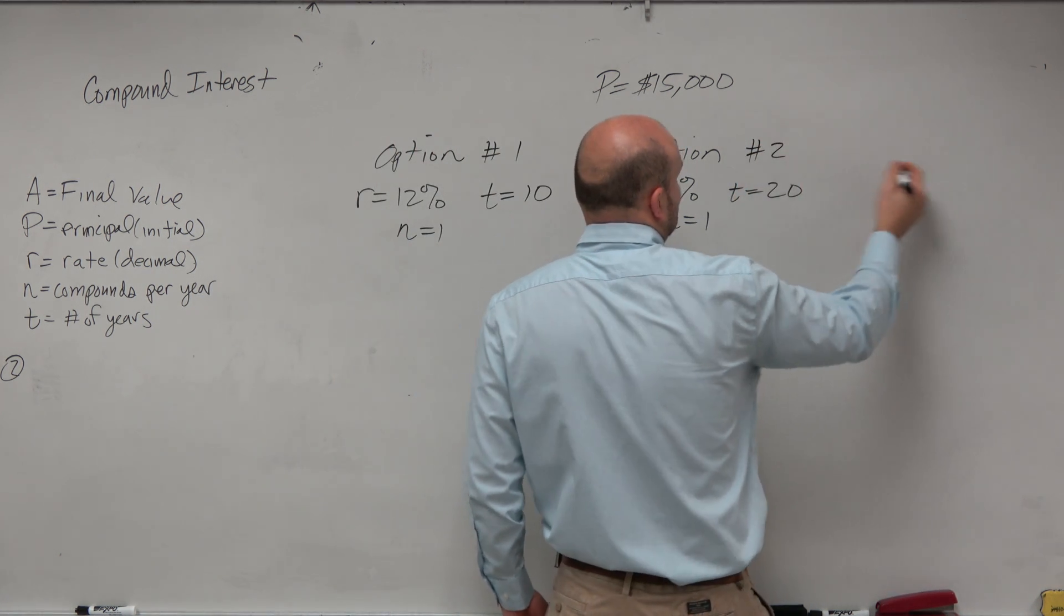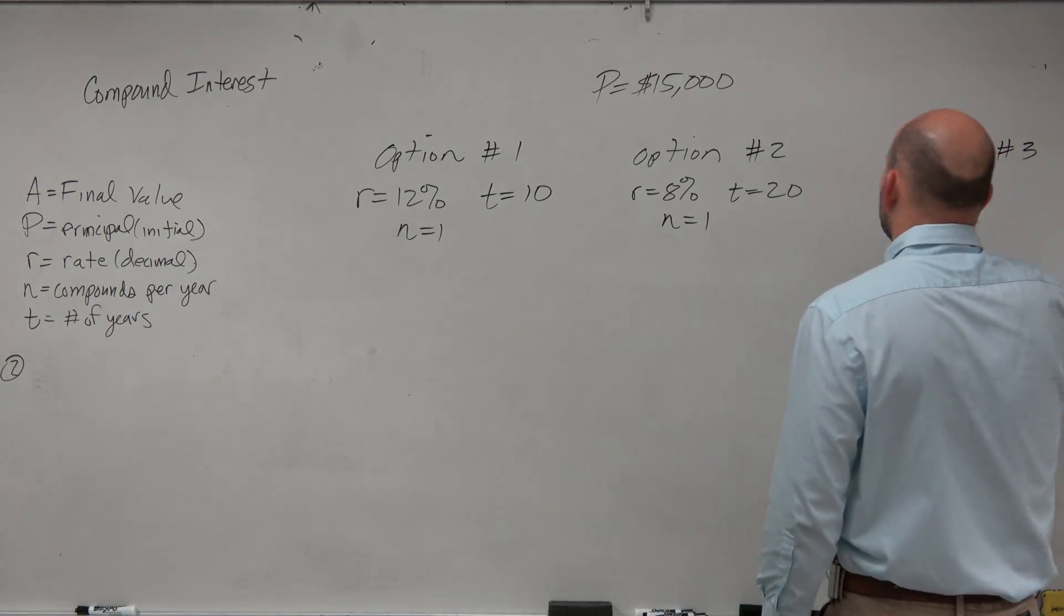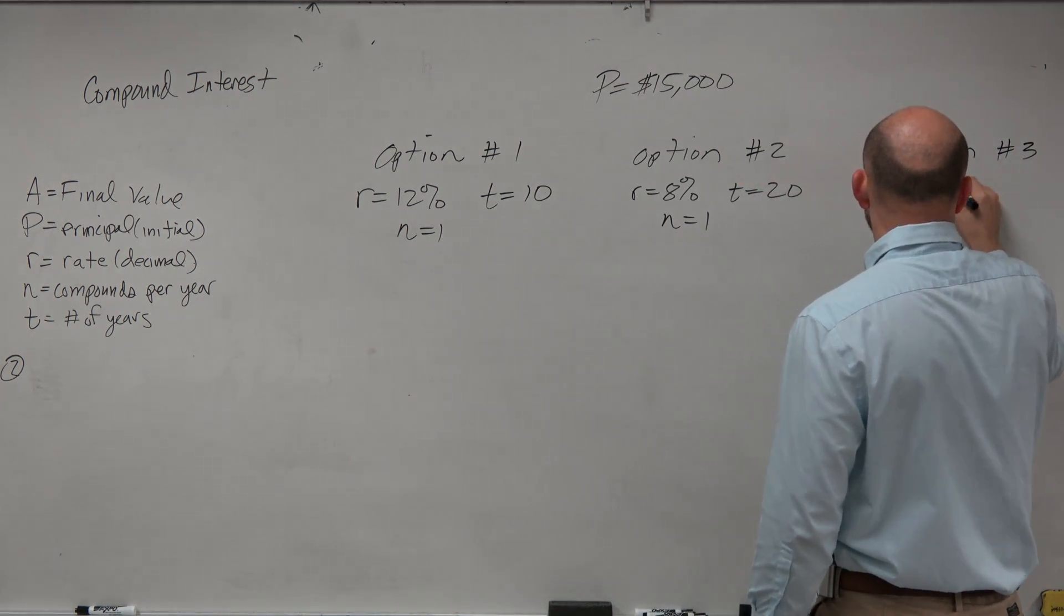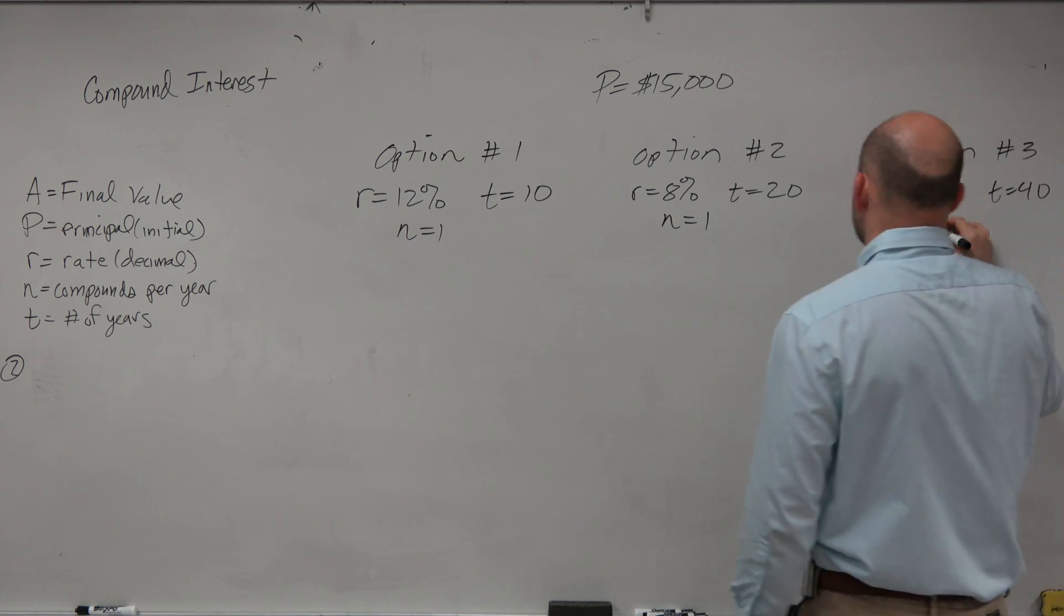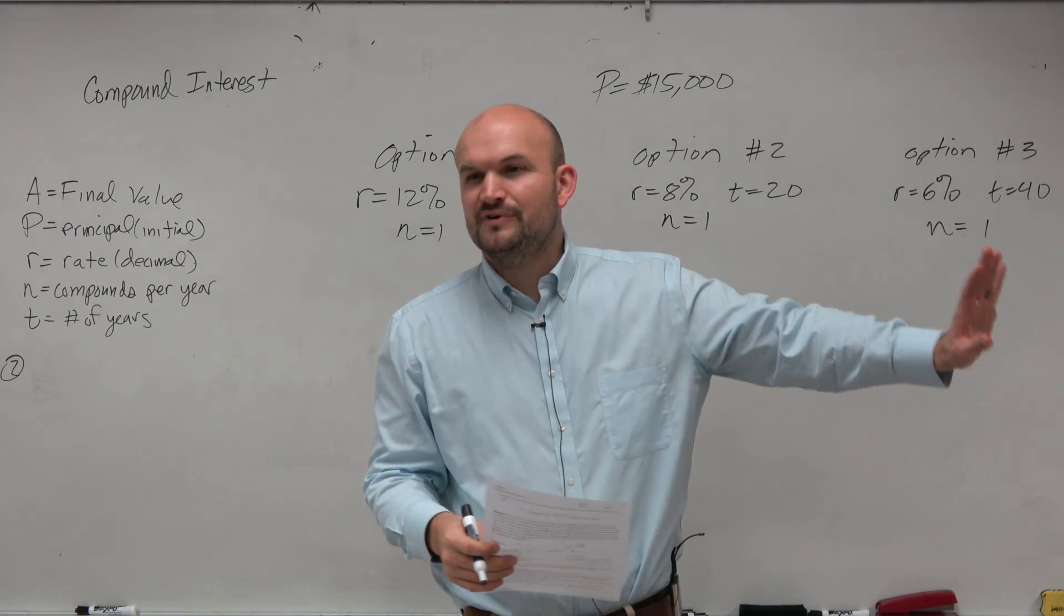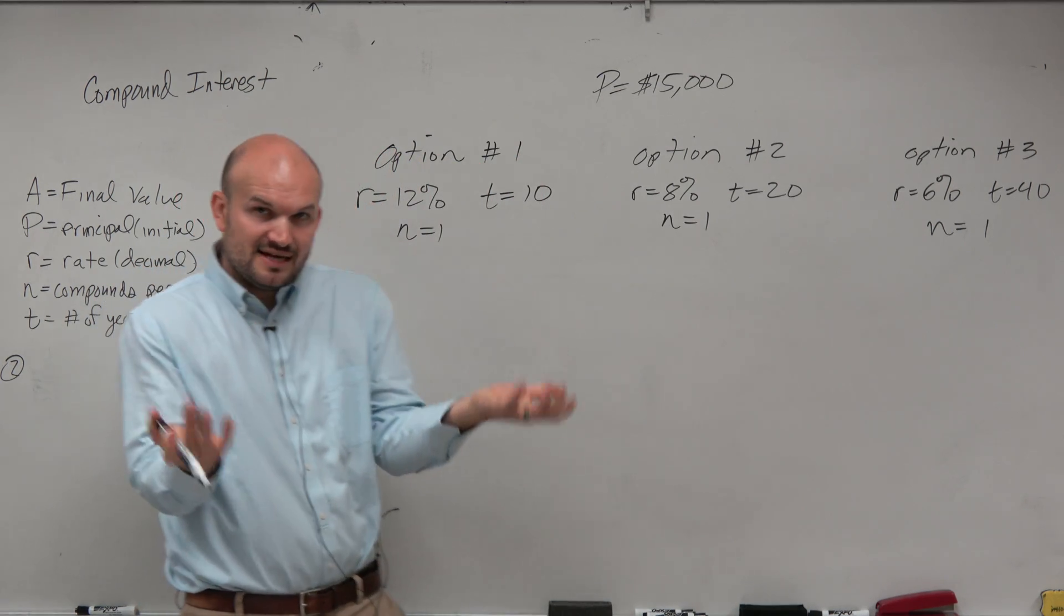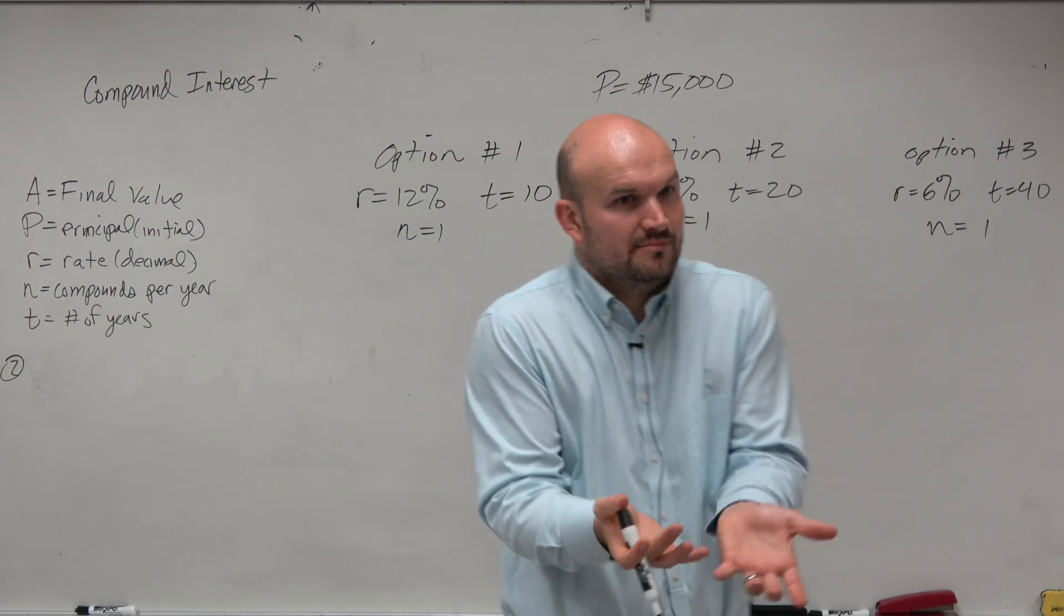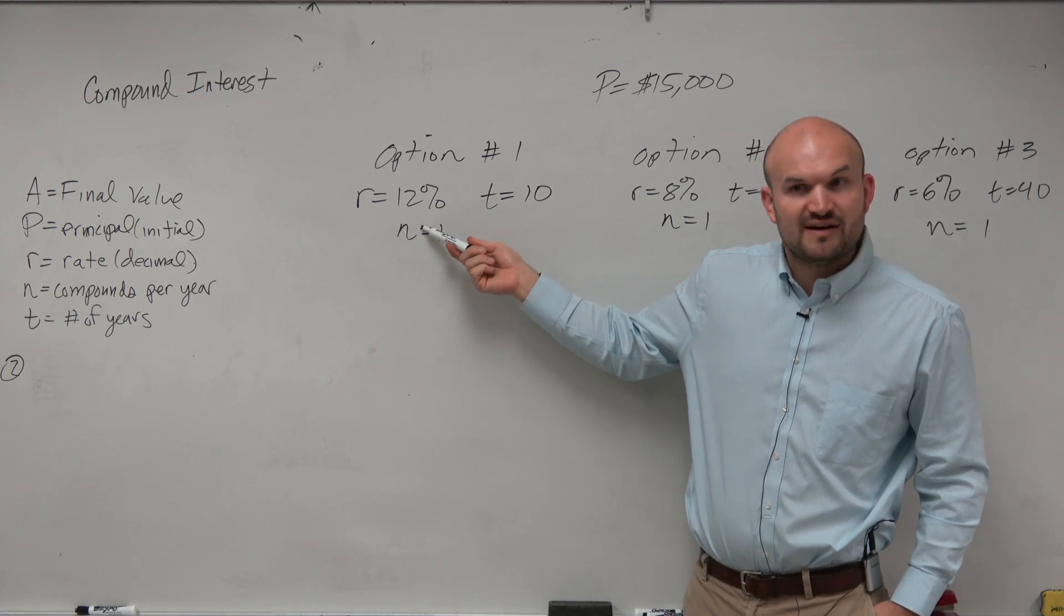And then the last option is we're going to reduce the rate to 6%, but we will increase the time. So the lower the rate, we're going to say, hey, let's just forget about this money. So let's kind of look at these two scenarios. You get the $15,000 for college. You're not going to need the money for college. So you take the money, you put it into kind of a higher risk investment, 12%. You're going to get it for 10 years.